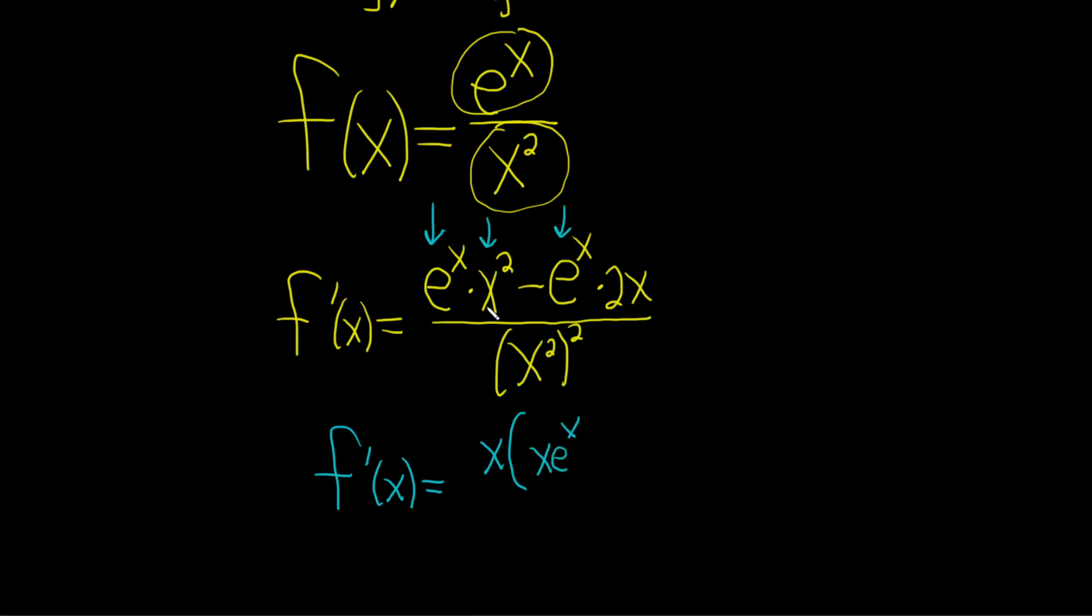You see what I did there? I put the x in the front. It makes it a little bit cleaner. x times x is x squared, so all is good. Then here, I'm going to pull out the x, and I'll just put the 2 in the front here. So minus 2e to the x. It's all being divided by, properties of exponents say that we multiply. So 2 times 2 is 4.